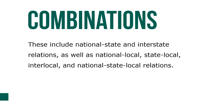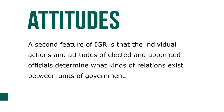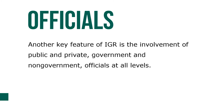The consequences of IGR are often unpredictable and decision-making is hidden from public view. A second feature of IGR is that the individual actions and attitudes of elected and appointed officials determine what kinds of relations exist between units of government. Third, IGR does not refer only to occasional interactions, single contacts, or formal agreements.